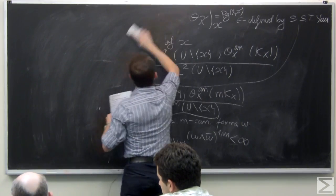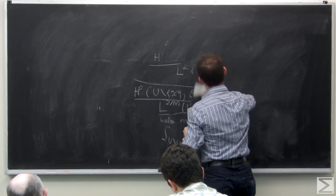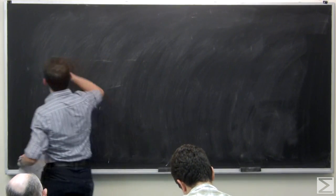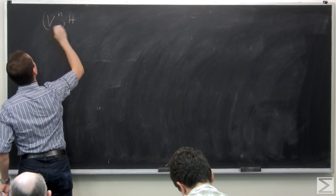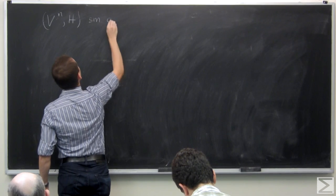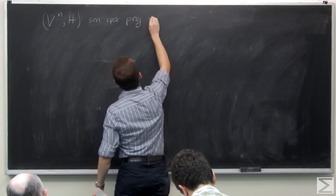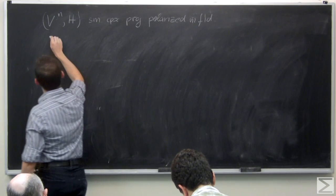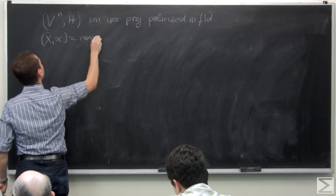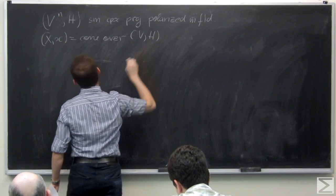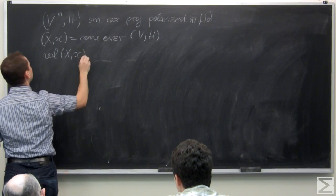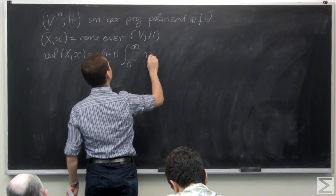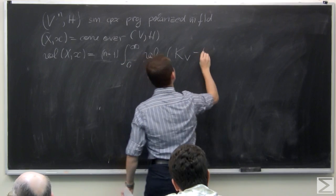Let's see an example. Some very easy-to-construct isolated singularities are cones over smooth varieties. Say V is n-dimensional, smooth, complex, projective, and polarized with H. X is the affine cone. The volume of the isolated singularity is (n+1) times the integral from 0 to infinity of the volume on V of K_V minus tH, dt. In particular, we can use this to construct isolated singularities of dimension ≥ 3 with irrational volume. On surfaces, the volume is always rational.